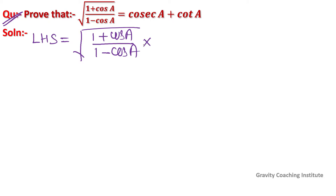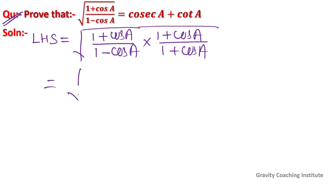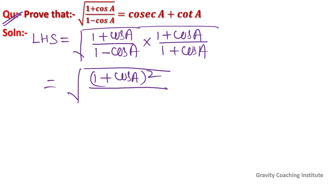Now we rationalize its denominator, multiplying by (1 plus cos A) upon (1 plus cos A). So we get root under (1 plus cos A) whole square upon the denominator, where we use the identity (a plus b)(a minus b) equal to a square minus b square.